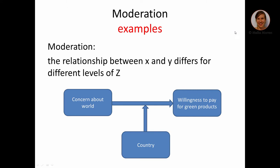To make it more clear, here are some examples. With moderation, it could be that concern about the world's environmental issues leads to a certain level of willingness to pay for green products. However, this relationship might differ between countries — maybe in Western countries it has a stronger relationship than in non-Western countries. Another example: a movie budget leads to a certain revenue, and we expect a positive relationship, but this relationship might differ between different countries.